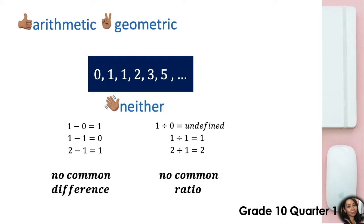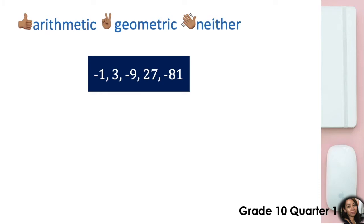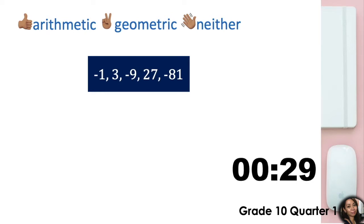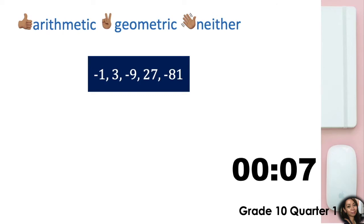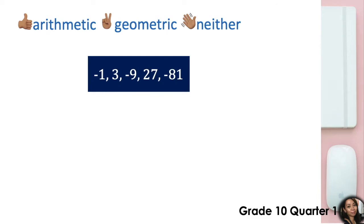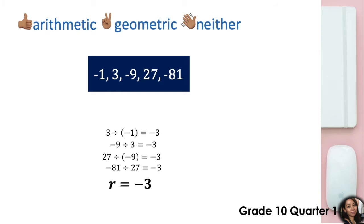Let's try our third problem: the sequence negative 1, 3, negative 9, 27, and negative 81. We noticed that there is a common ratio which is equal to negative 3. So, what is your answer? Correct! This is a geometric sequence.